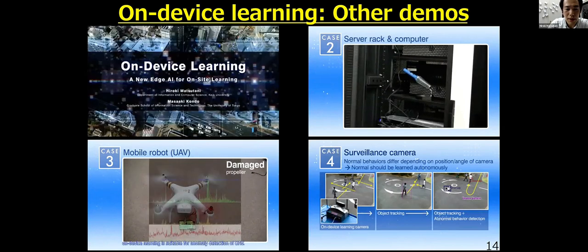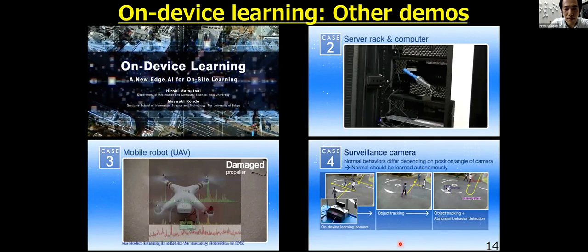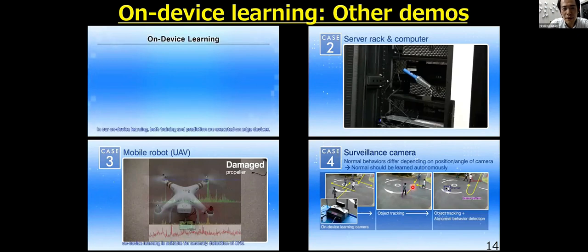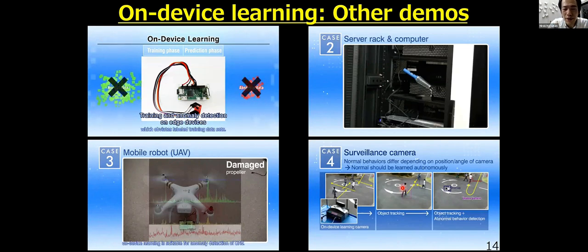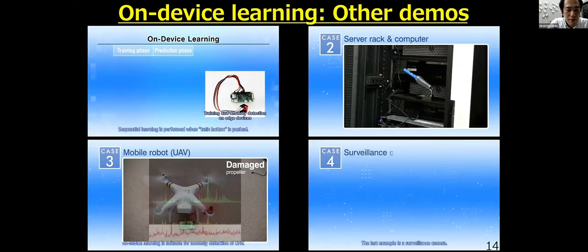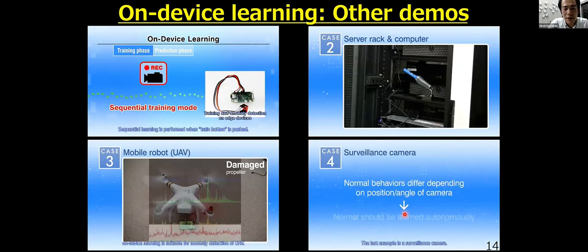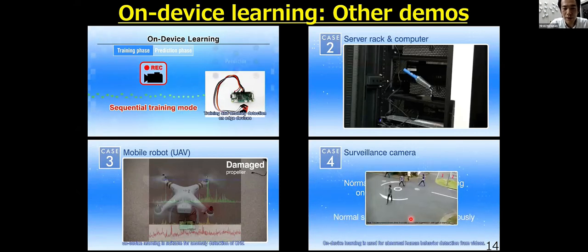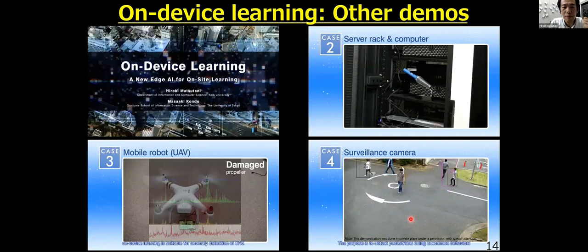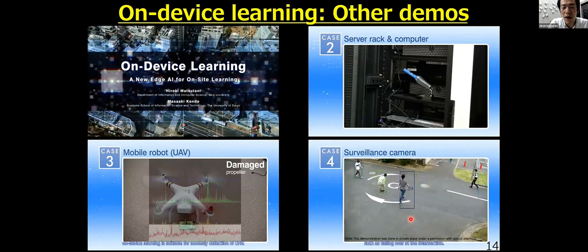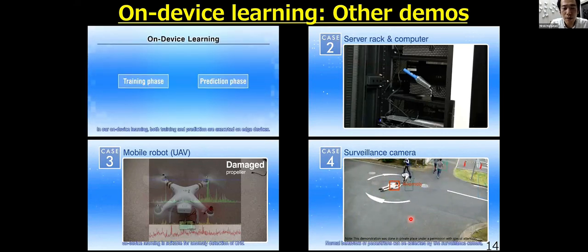In the lower right video, on-device learning is combined with CNN or YOLO for object detection. The trajectories of working people are extracted by YOLO or CNN, and then the trajectories are inputted to the on-device learning to detect abnormal trajectories. The system learns normal trajectories of walking people first, and then it can be used for abnormal behavior detection.